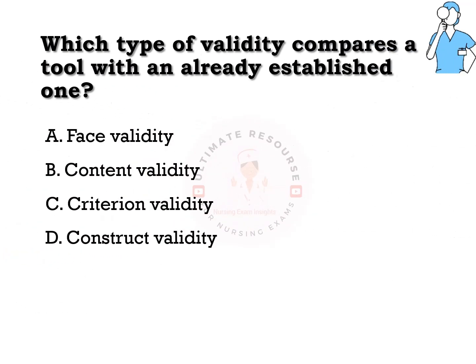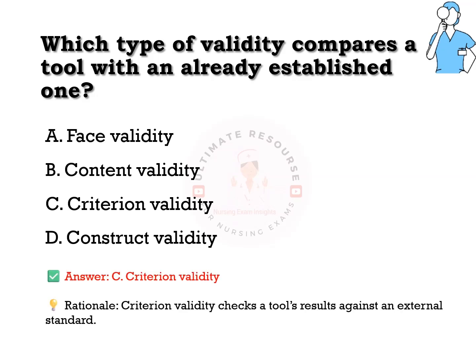Which type of validity compares a tool with an already established one? Options are a) face validity, b) content validity, c) criterion validity, d) construct validity. The answer is c) criterion validity. Criterion validity checks a tool's results against an external standard.